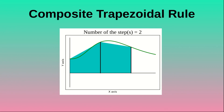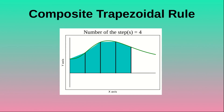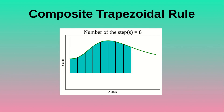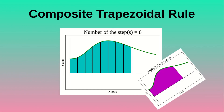If we keep on increasing the number of steps — suppose we make it 3, then 4, then 5, then 6, then 7, then 8 — we see that the result is actually quite similar to the analytical result. So what people have concluded is that as the number of steps increases, we are getting closer to the analytical integration.